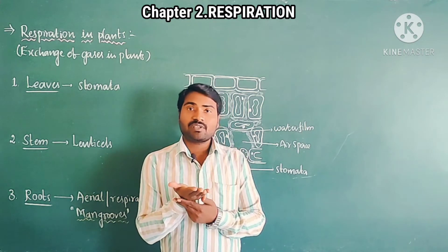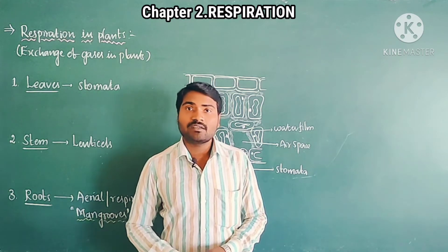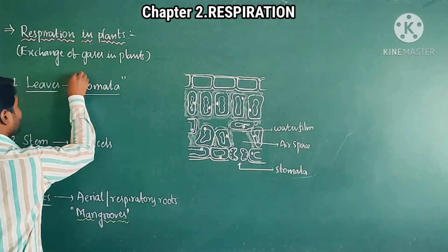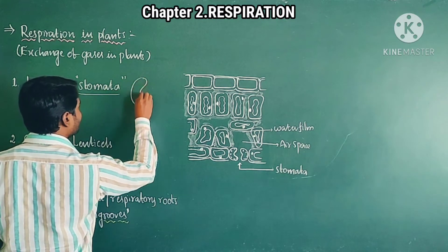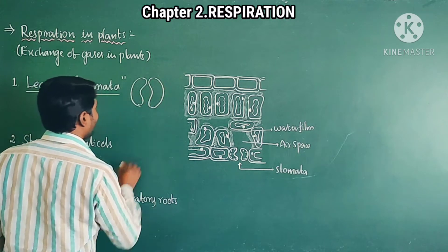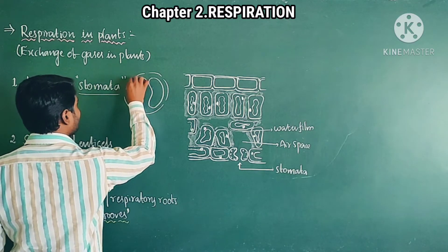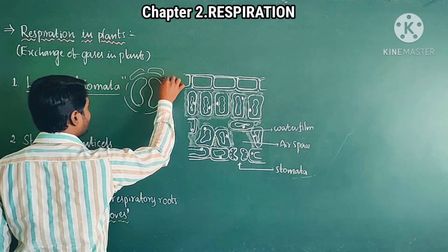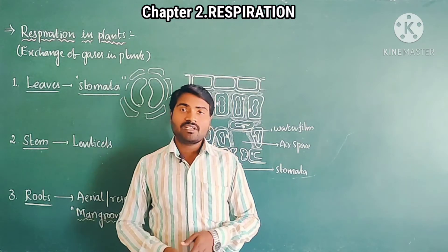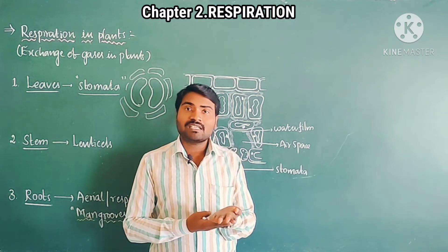In the lower surface of the leaf, what structures are present? There are small, minute pores present. Those pores are called stomata. We know that stomata are surrounded by guard cells, and these also have epidermal cells. So this is the stomata structure.